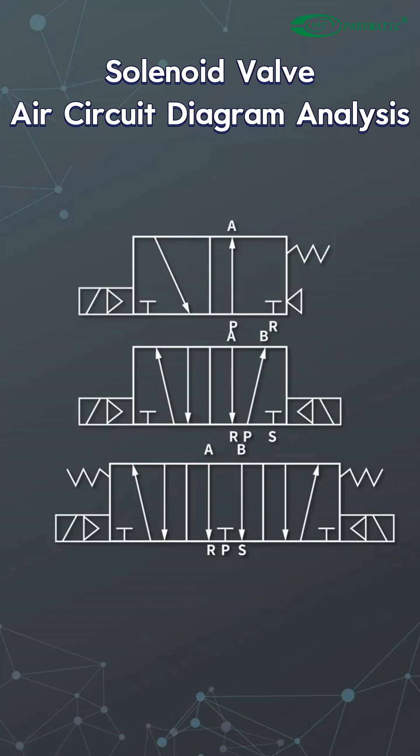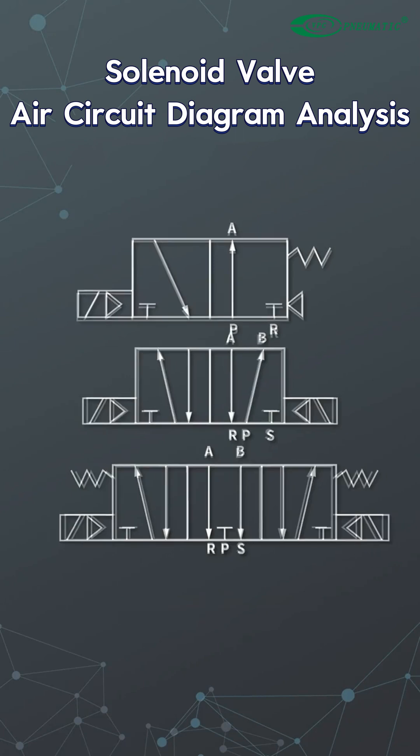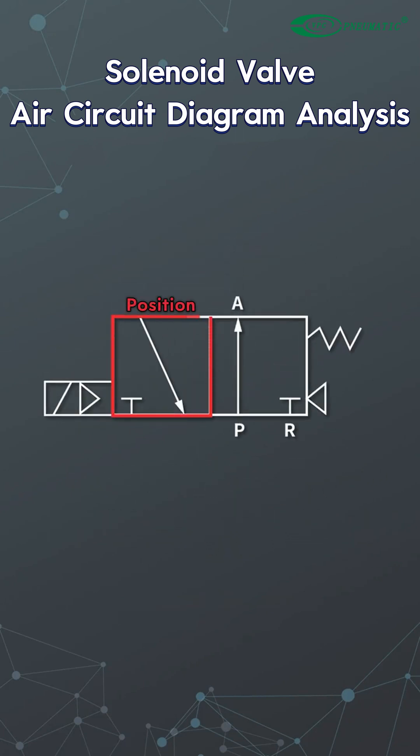How to read the air circuit diagram on the solenoid valve. The square frame represents the position of the valve spool, which can be changed. Commonly used are two-frame and three-frame, which means the valve spool can switch between two or three positions — also known as two-position and three-position.